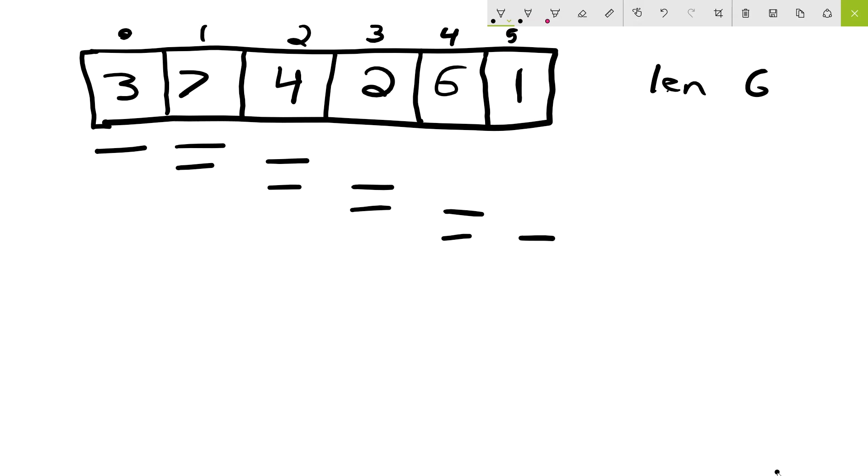So we have 3 and 7. Now we look at the next adjacent pair, which is the swapped 7 and the 4. Well, these are also not in order, so we'll swap. Next, we look at the second and third indexes, and once again, they're not in order, so we switch them.